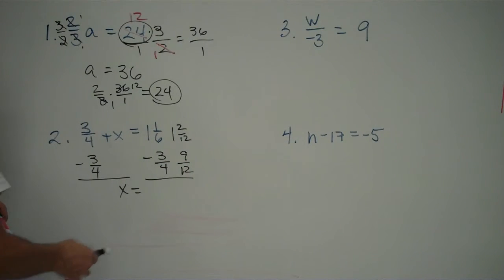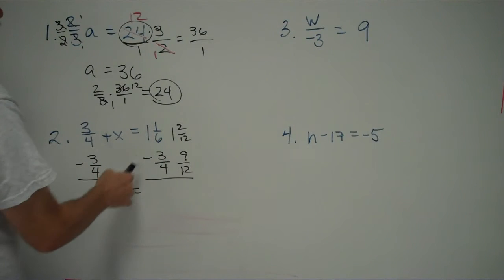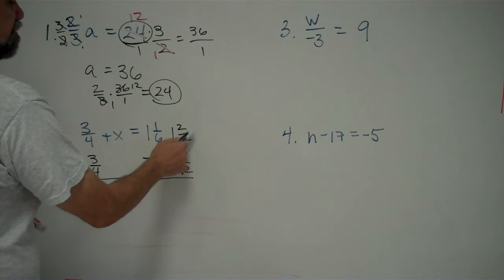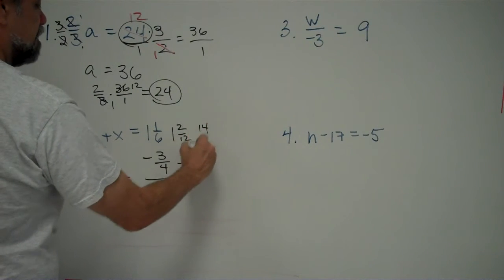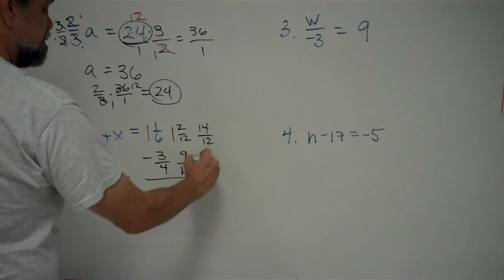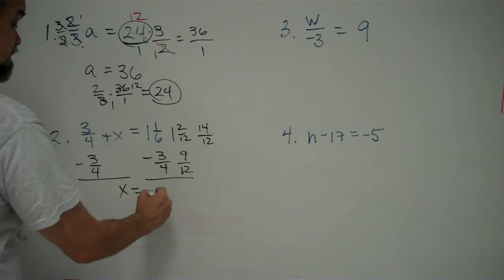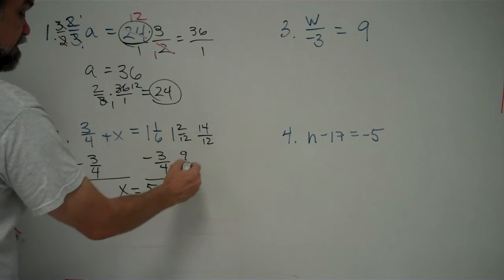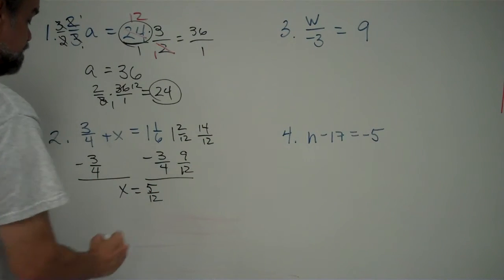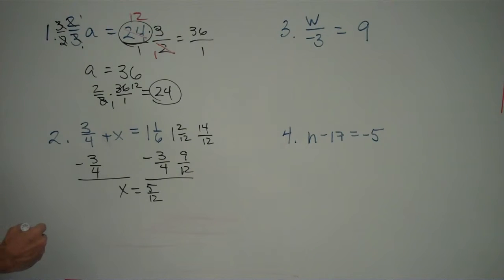Now, I've got another problem. I can't take 9 from 2. So, I have to rename this again. And I'm going to have to turn it into an improper fraction, I guess, because I'm going to have to borrow 1 from right here. 1 times 12 is 12, plus 2 is 14. So, that means I have 14 twelfths minus 9 twelfths, that I know how to do. 14 minus 9 is 5, and I keep the same denominator, 12. So, I have x equals 5 twelfths.